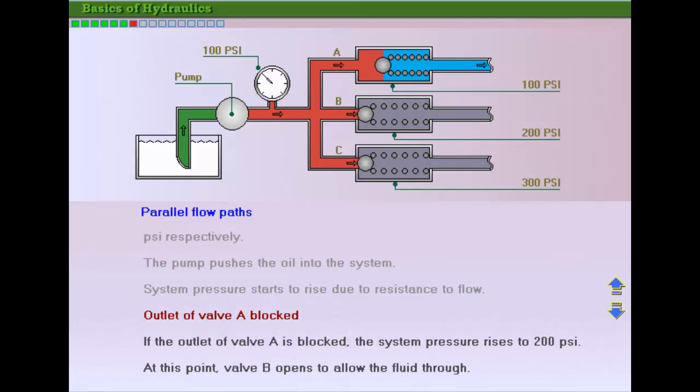If valve A gets blocked, the pressure will rise to 200 psi, and oil will flow out through the second path, B, which is now the path of least resistance.